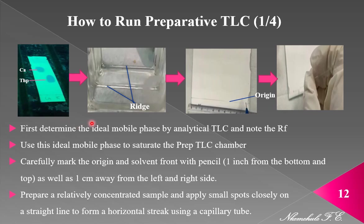Next, before you prepare your plate, you have to saturate the chamber, or what we call a tank. You pour the mobile phase just enough to reach the ledge — about the level of 0.5 cm. Then you seal the tank with the lid to enable it to saturate for about 10 minutes. Then you go ahead and prepare your plates.